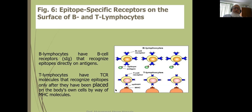In summary: B cell receptors can recognize any antigen without processing or MHC association. T cell receptors require the antigen to be a processed peptide and in association with MHC class 1 or MHC class 2.